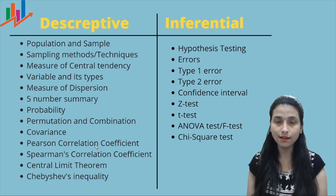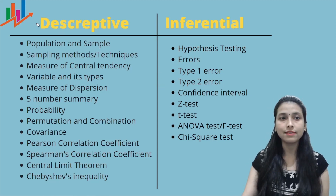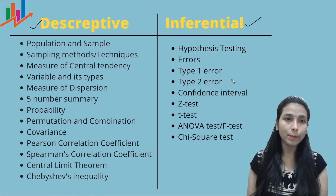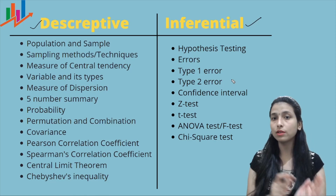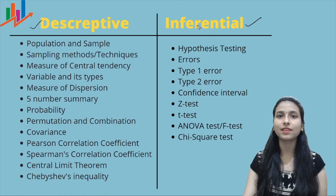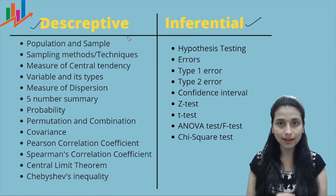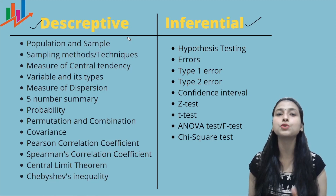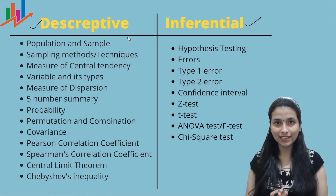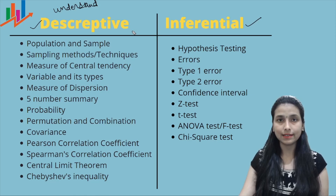As discussed in the previous video, the whole statistics world falls under two types: descriptive and inferential. In this video we will discuss what topics fall under descriptive and what topics fall under inferential. Under descriptive statistics, we mainly understand our data — we analyze it, visualize it, and summarize it. In simpler words, the main aim is to understand the data.